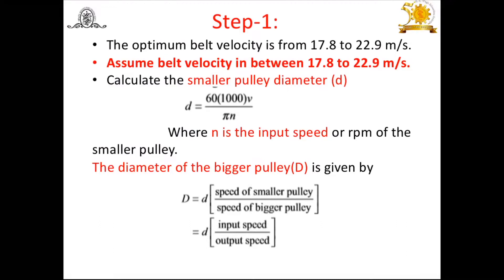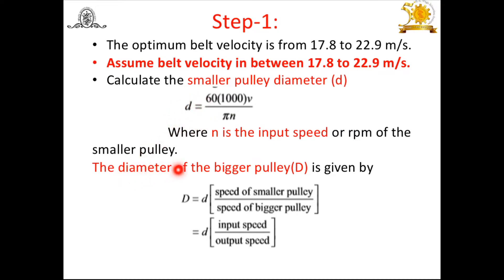In the second step, based on the assumed velocity, calculate the smaller pulley diameter. There is a driving pulley and a driven pulley in an open flat belt drive. The formula is: V = π·d·n / (60 × 10³), therefore d = 60 × (1000 × V) / (π·n), where n is the input speed or RPM of the smaller pulley. Using this expression, we can find the diameter of the smaller or driving pulley.